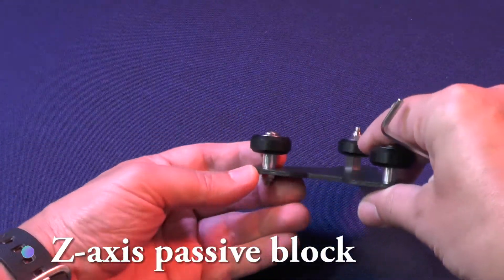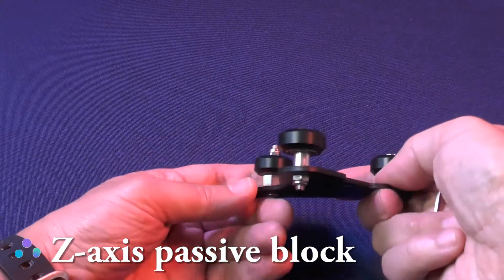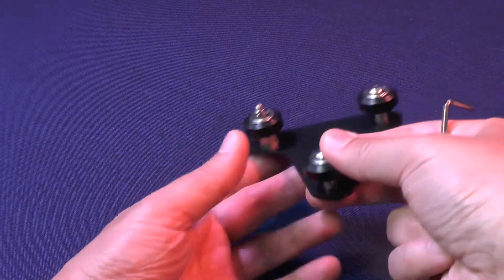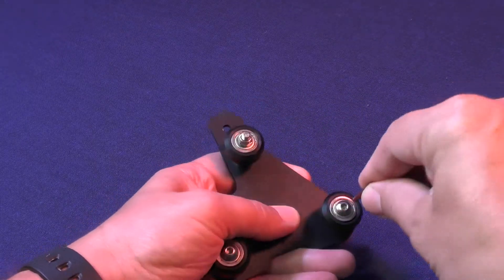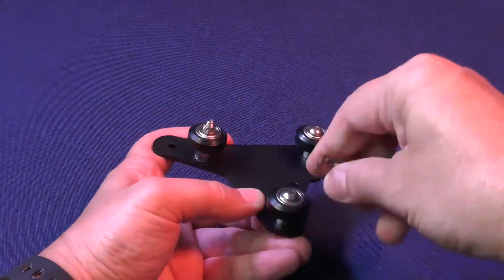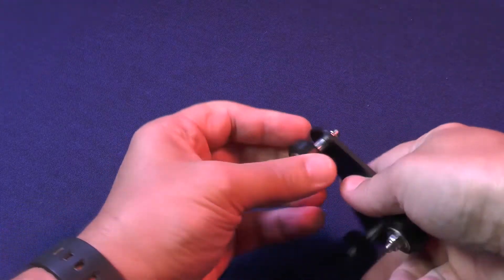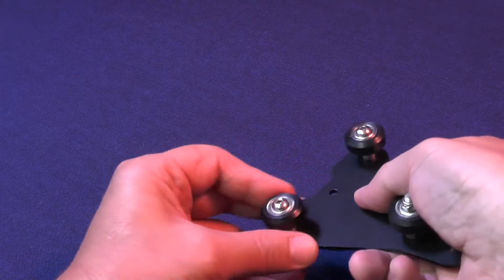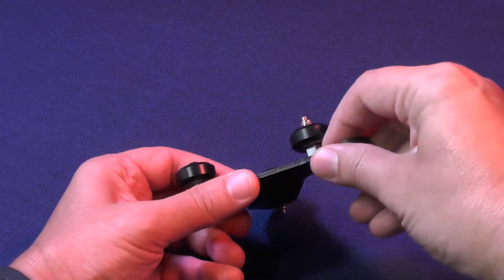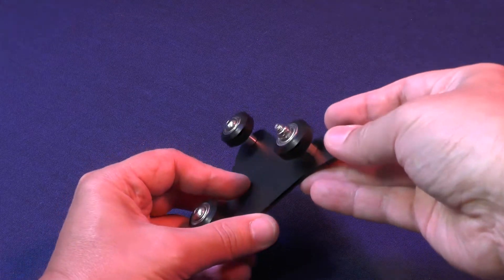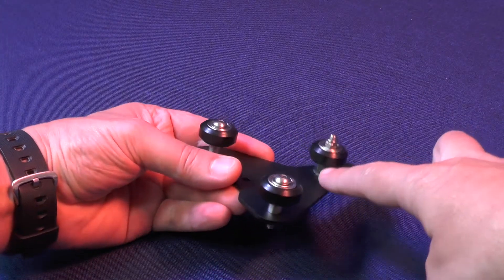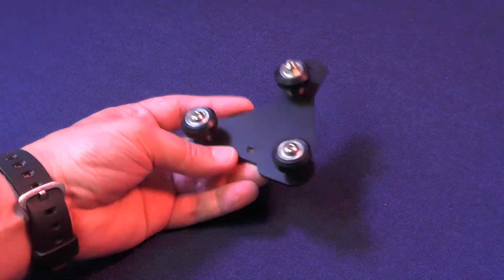We will start out with the Z-axis passive block. And the first thing that we'll do is to tighten the screws for the wheels that don't have the eccentric nut. Now you pick up the 2040 aluminum extrusion and slide it in between the wheel that has the eccentric nut and the other two wheels that don't have eccentric nuts.